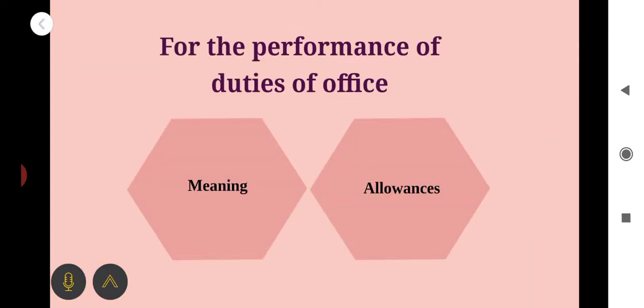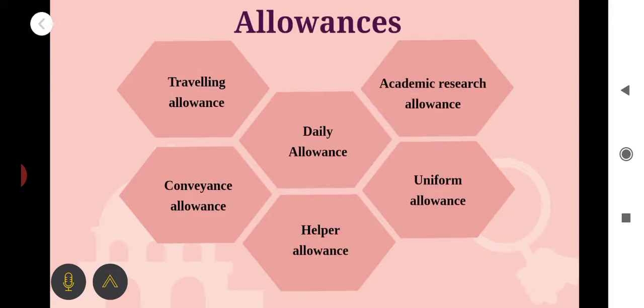Which are these allowances? Some examples are: travelling allowances, conveyance allowances, daily allowances, academic research allowances, helper allowances, uniform allowances, etc. Many more items are shown in your textbook. Please go through the textbook for details of all allowances coming under the category of special allowances for the performance of duties.